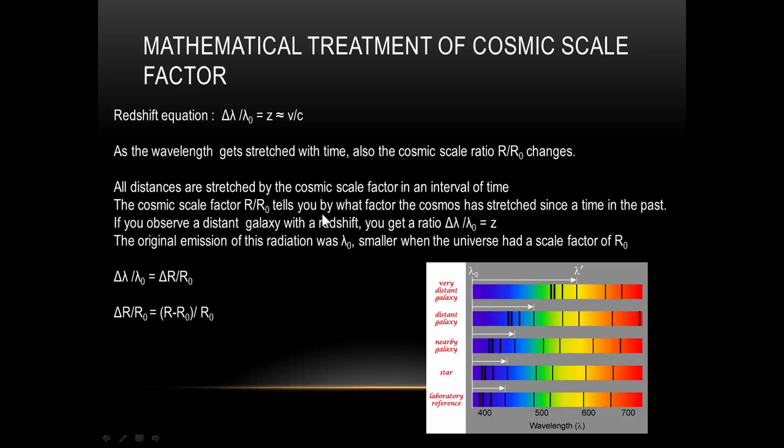We can rearrange this. We divide R minus R nought by R nought, and we can end up with this. Now, we can simplify R nought divided by R nought as being equal to 1. So we say that ΔR/R₀ is equal to R/R₀ minus 1,